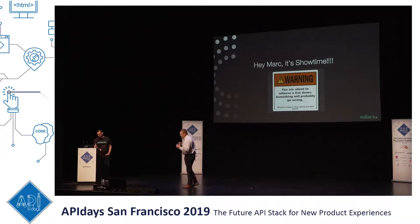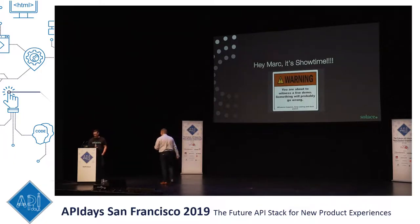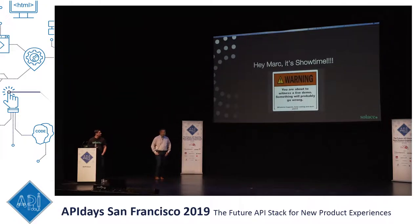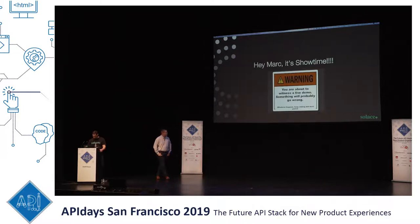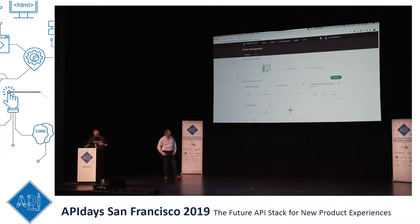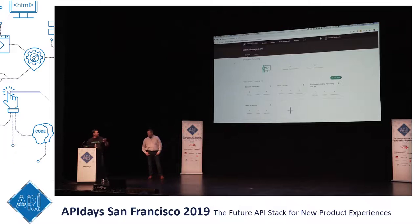It's time to do a demo of what we're bringing to market this fall. There's a live demo warning — things are bound to go wrong. Mark takes over. After a brief display mirroring issue, the event portal preview loads. The goal is to allow architects to design and visualize event-driven architectures. The home screen shows different application domains — which could be different lines of business, software engineering groups, or projects within an organization.